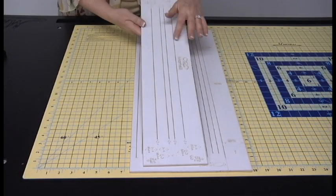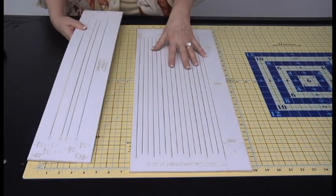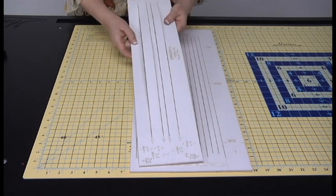Okay, so here are my two rulers. My no slip strip ruler, my half inch ruler. This one has multiple widths.